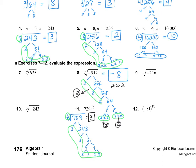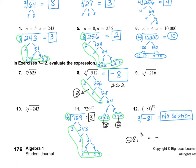Number 12 is negative 81 to the 1/2. Since the negative is part of the parentheses, it is inside the root — so that is the square root of negative 81. Remember, if we have an even index and there's a negative on the inside, there is not going to be an answer. So this is no solution. Incidentally, if the parentheses were not there — so negative 81 without parentheses to the 1/2 — then the negative would not be part of the exponent, and this would be negative the square root of 81, which has an answer of negative 9. So those parentheses really do make a difference.